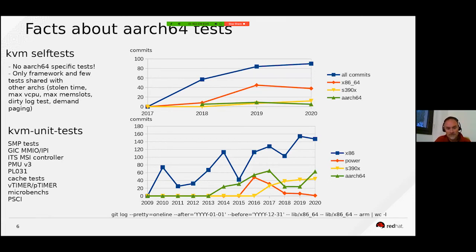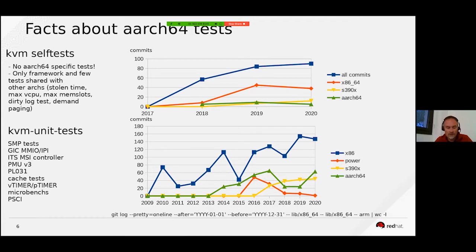Of course some commits are related to framework stuff, but globally we have a very small number of commits related to ARM in both frameworks. For KVM self-tests it is quite simple: we have no ARM-specific tests, only the framework itself supports ARM.